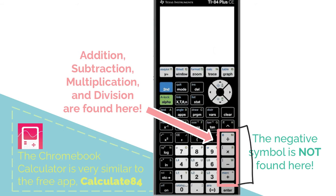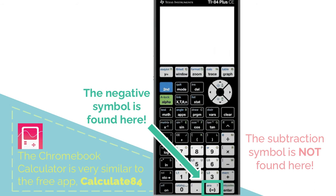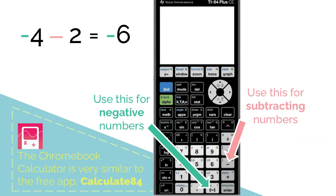The negative symbol is not found on the gray buttons. The negative symbol is found next to enter by the white numbers. The negative symbol and the subtraction symbol are not the same. Use the white button for negative numbers and the gray button for subtracting numbers.